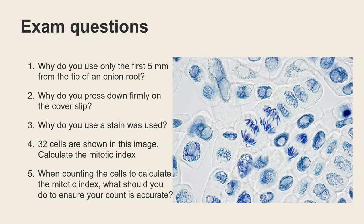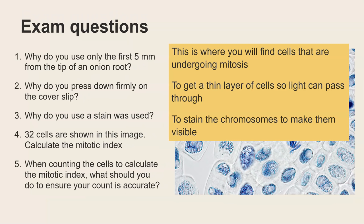So the typical exam questions you get linked to this required practical would be number one two and three are linked to the method so why do you use only the first five millimeters from the root tip of an onion or it could be a garlic why do you press down firmly or in our case we said it's actually quite gently but press down is the key thing and why do you use a stain now if you want to have a go at these pause the video have a go but I'm going to go straight through now answering those questions.